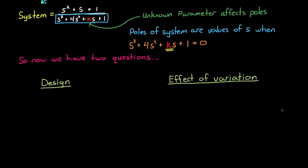The first is a question of control system design. And the second question would be the effect of variation on a control system that's already been designed. On the control system design side, the question is, what value of k should I choose to meet the required system performance, that is having poles in the correct location in the s-plane?